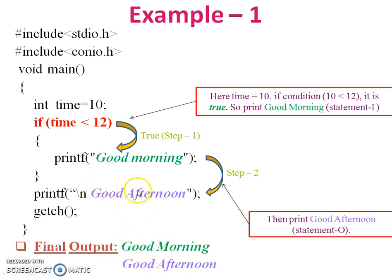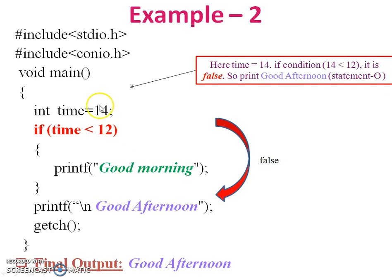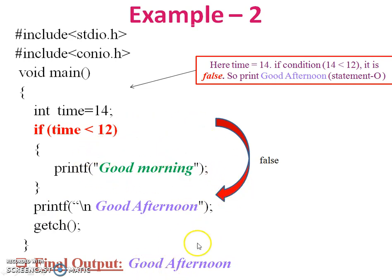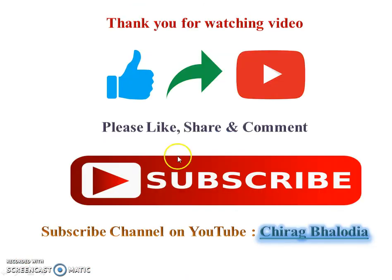Example 2: The integer value 'time' is equal to 14. The condition checks: is 14 less than 12? No, it is false. So execution jumps directly to the printf statement outside the if body — 'good morning' inside the condition is not executed. The final output is: good afternoon. Thank you for watching. Please like, share, comment, and subscribe to my channel.